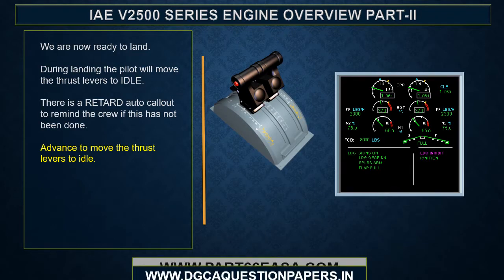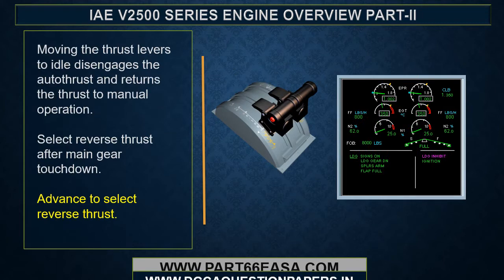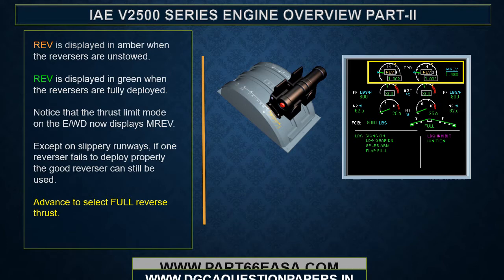We are now ready to land. During landing, the pilot will move the thrust levers to idle — there is a retard auto callout to remind the crew if this has not been done. Moving the thrust levers to idle disengages the autothrust and returns thrust to manual operation. Select reverse thrust after main gear touchdown. Reverse is displayed in amber when the reversers aren't stowed, and in green when fully deployed. The thrust limit mode on the EWD now displays max reverse.